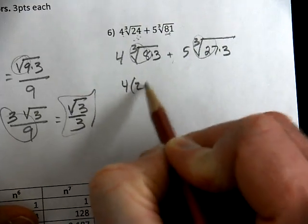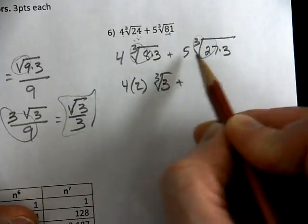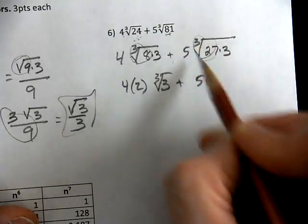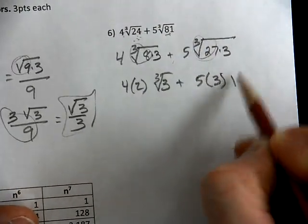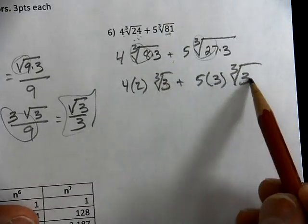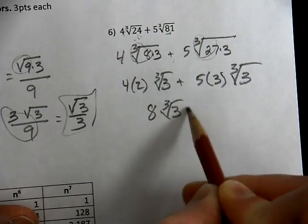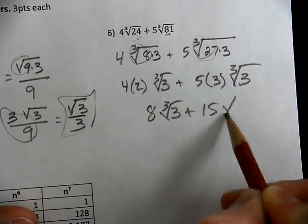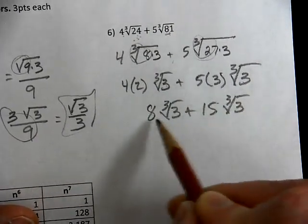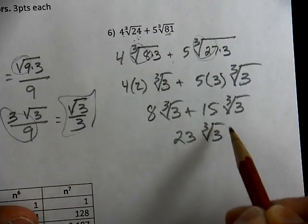We're going to take the cubed root. The cubed root of 8 is 2, and I'm left with the cubed root of 3, and the cubed root of 27 is 3, and my radicals are exactly the same. So this is 8 cubed root of 3 plus 15 cubed root of 3, so that gives me 23 cubed root of 3.